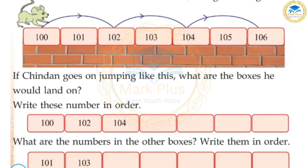What are the numbers in the other boxes? Write them in order. The numbers are: 101, 103, next is 105, 107, 109, 111, 113.